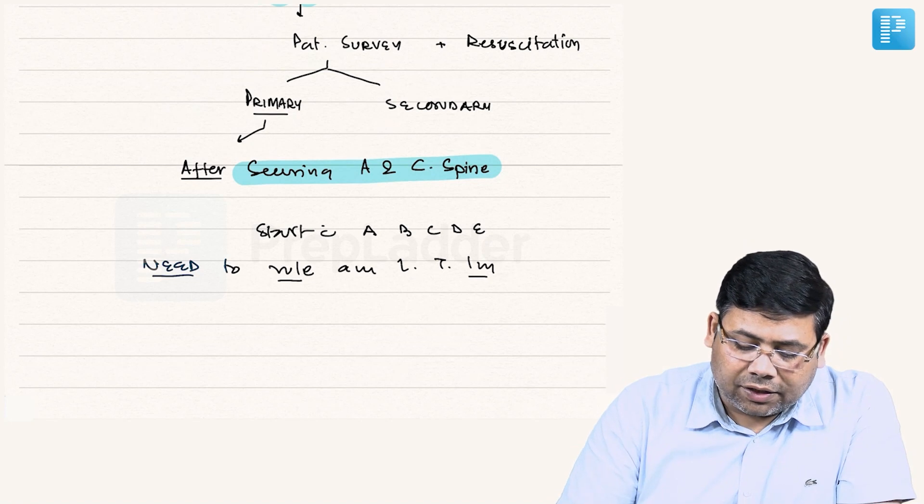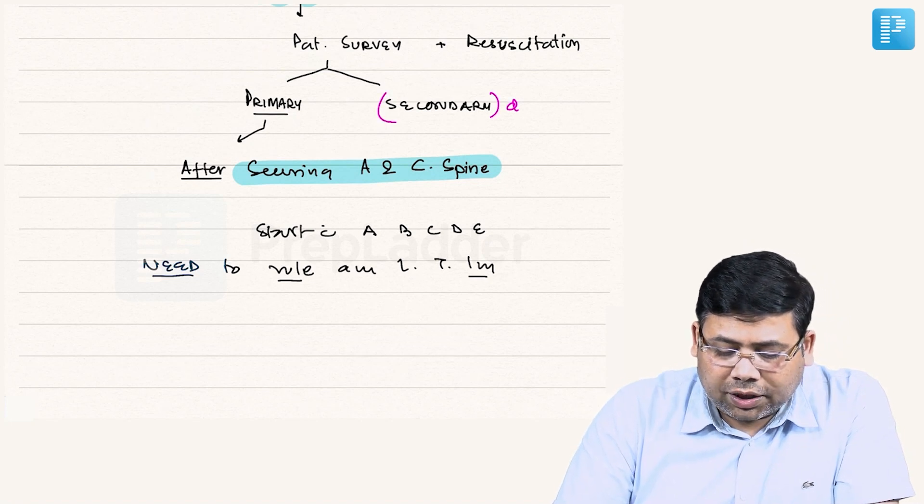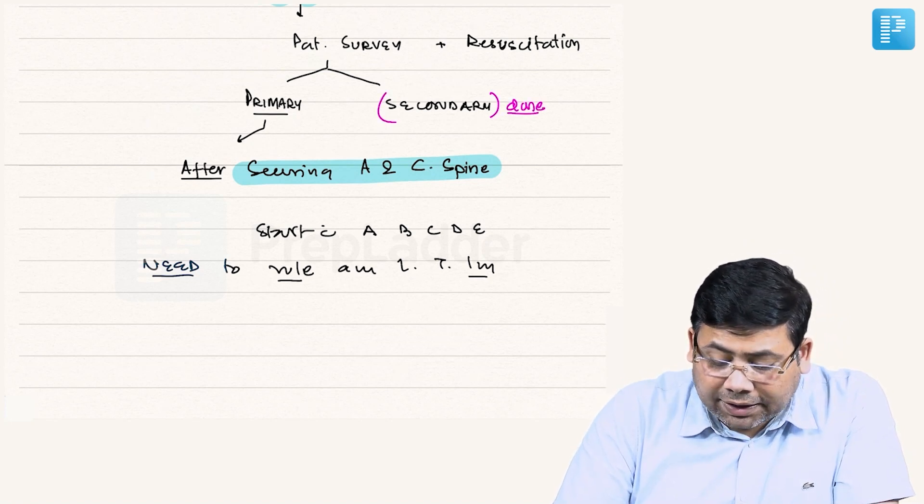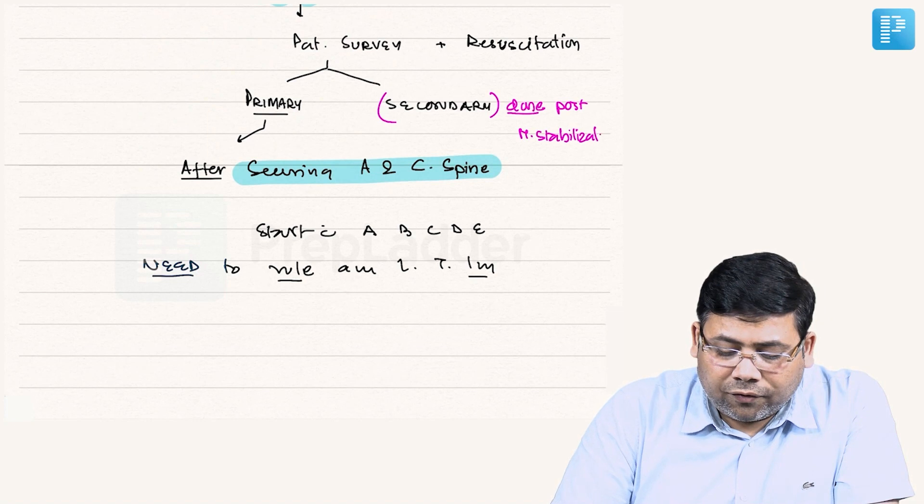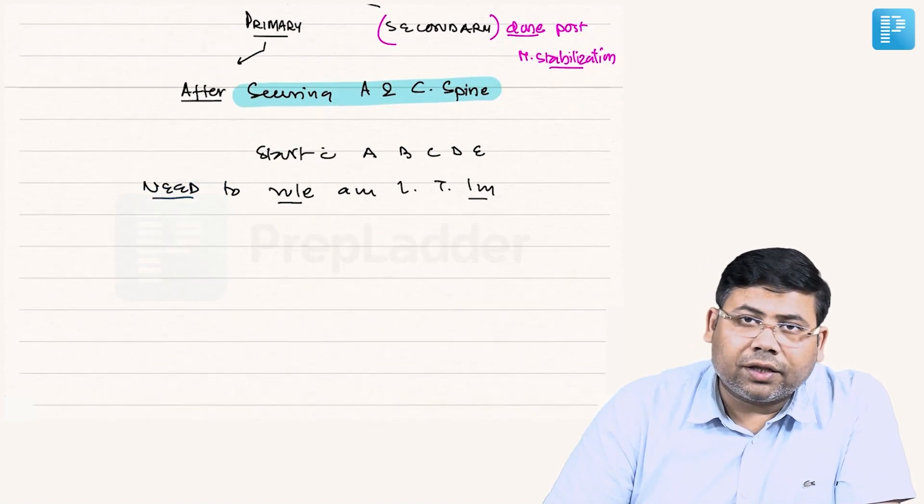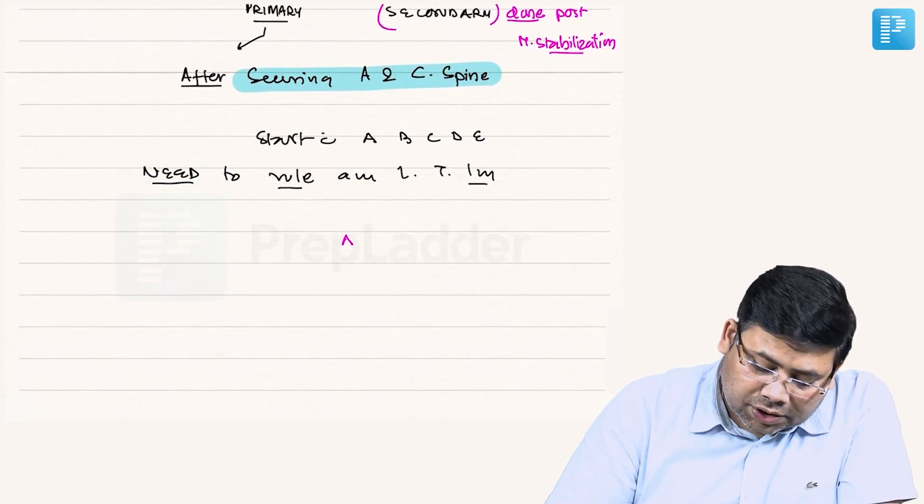Now what is the concept of secondary survey? This is done post hemodynamic stabilization. Why is it done post hemodynamic stabilization? The logic is that we want to furnish information which can modify the outcome.